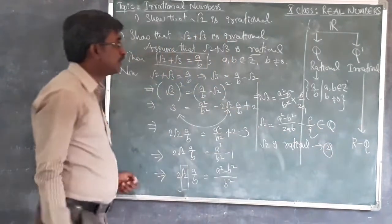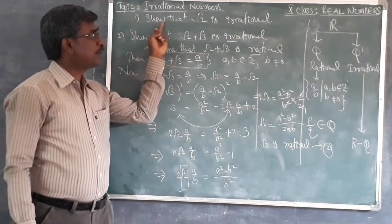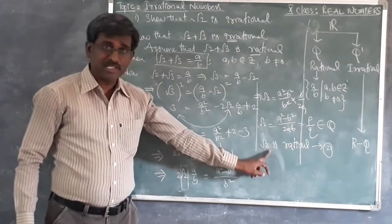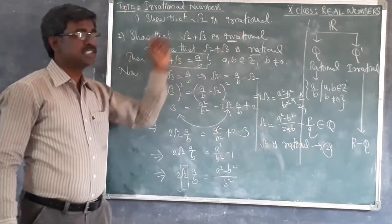Observe this result. Already in the first problem we have proved that root 2 is one of the irrational numbers. So here we got such a result which contradicts the concept of irrational.